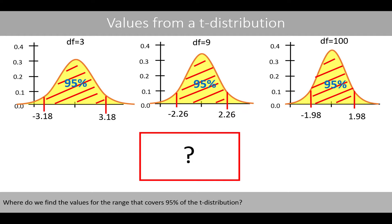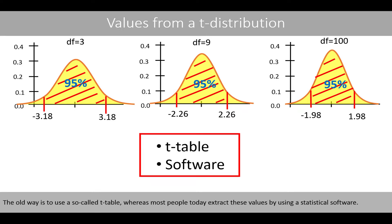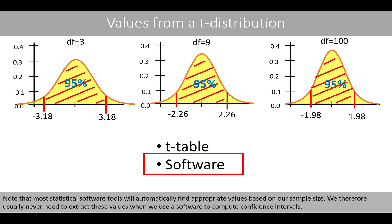So, where do we find the values for the range that covers 95% of the t-distribution? The old way is to use the so-called t-table, whereas most people today extract these values by using a statistical software. Note that most statistical software tools will automatically find appropriate values based on our sample size. We therefore usually never need to extract these values when we use the software to compute confidence intervals.